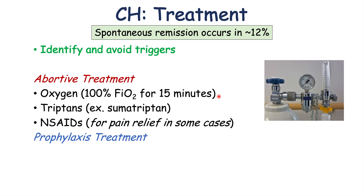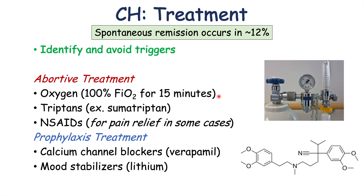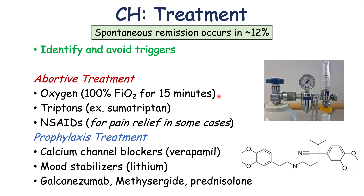For prophylaxis — treatments to help reduce future cluster headaches — options include calcium channel blockers like verapamil, mood stabilizers such as lithium, galcanezumab, methysergide, and prednisolone.